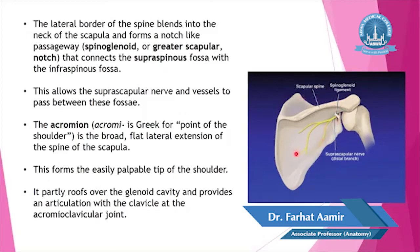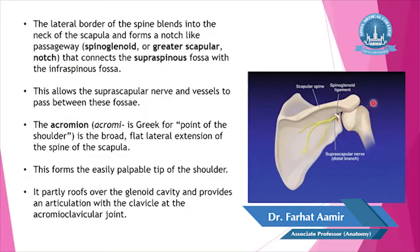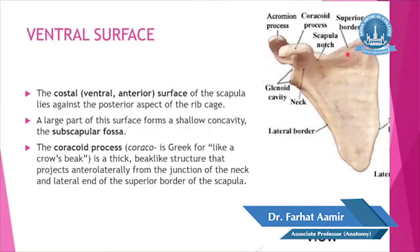The acromion — from the Greek word meaning 'point of the shoulder' — is a broad flat lateral extension of the spine of the scapula. It forms the easily palpable tip of the shoulder, partly roofs over the glenoid cavity, and provides an articulation with the clavicle at the acromioclavicular joint, which is a plane variety of synovial joint.